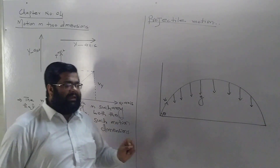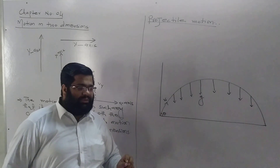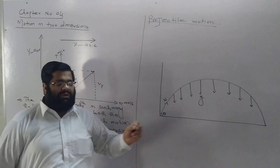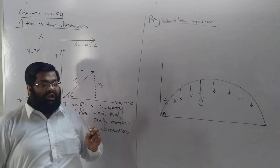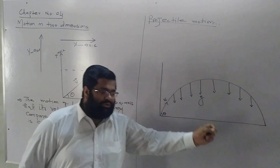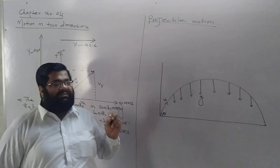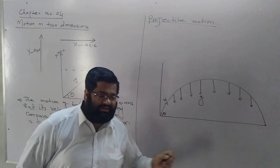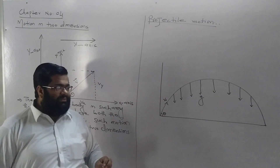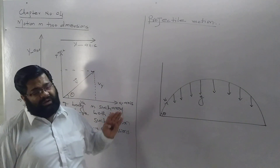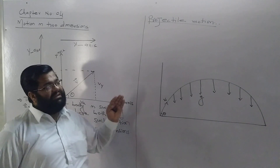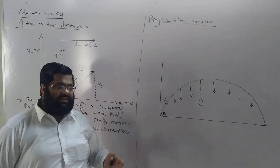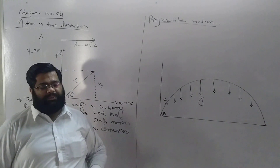Examples of projectile motion include: a football team player, motion of jumping animals, a long jump, a kangaroo jump, an object released from an aeroplane, and a missile shot from a launcher. All of these are examples of projectile motion.